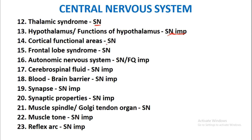Cortical functional areas will be asked as a short note. Frontal lobe syndrome may be asked as a short note — please try to read it at least once. Autonomic nervous system will be asked either as a short note or as a full question, and it is one of the most important full questions.